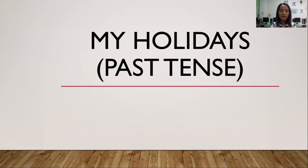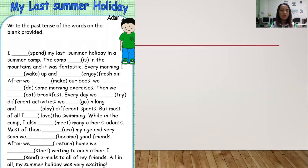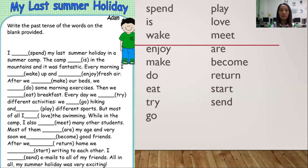Now let's move on to 'My Holidays' — past tense of words. For the first part of your activity, we have a paragraph called 'My Last Summer Holiday.' The instruction is to write the past tense of the words on the blank provided. We have some words inside the brackets. Let's read it first — I want you to follow with me on your screen.